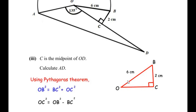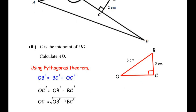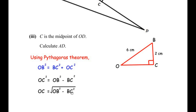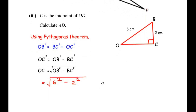Using the Pythagorean theorem: OB squared equals BC squared plus OC squared. Since we need to find OC, we make it the subject: OC squared equals OB squared minus BC squared, so OC equals the square root of OB squared minus BC squared. Substituting: square root of 6 squared minus 2 squared.